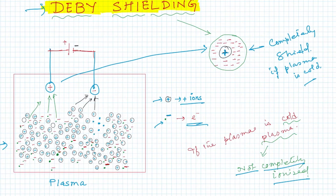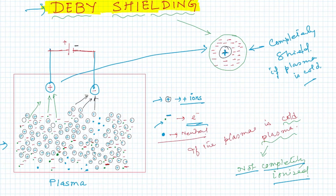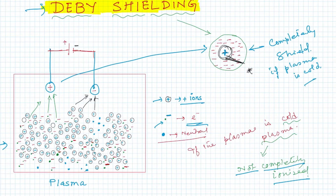Other than the positive and negatively charged ions, there must be some neutral particles also. When the sphere is completely sealed, the electric field due to this positively charged ion outside the sphere will be zero — there will be no influence of this electric field outside.